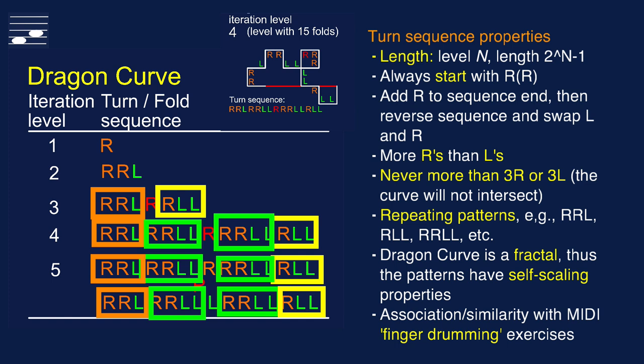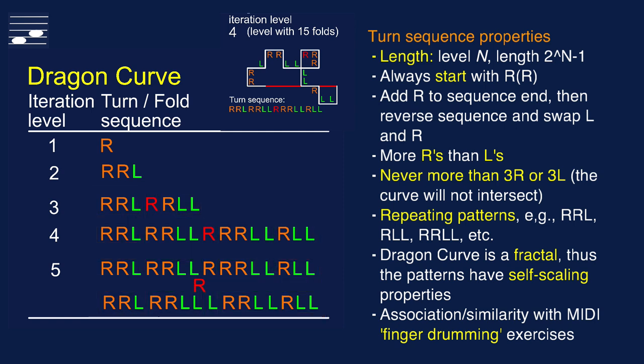You may discern sub-patterns in the sequence, such as RRL, RLL or RRLL. Since the Dragon curve fractal has the self-scaling property, these subgroups and patterns will reappear, more frequently at the higher iteration levels, with longer sequences. When I saw these RL sequences, I immediately noticed the similarity with MIDI keyboard finger drumming exercises involving two hands, and that is what inspired me to create this tutorial.